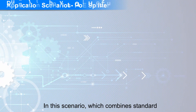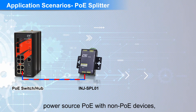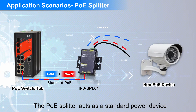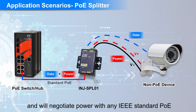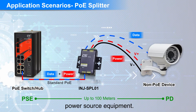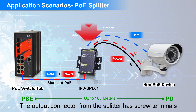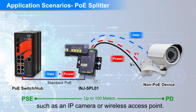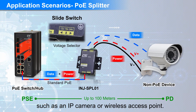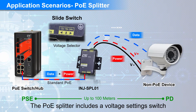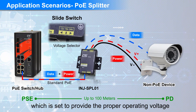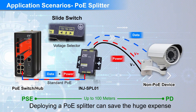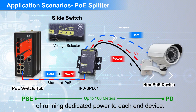In this scenario, which combines standard power source PoE with non-PoE devices, we use a PoE splitter. The PoE splitter acts as a standard power device and will negotiate power with any IEEE standard PoE power source equipment. The output connector from the splitter has screw terminals which can attach DC voltage to a non-PoE device such as an IP camera or wireless access point. The PoE splitter includes a voltage setting switch to provide the proper operating voltage, and deploying a PoE splitter can save the huge expense of running dedicated power to each end device.